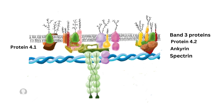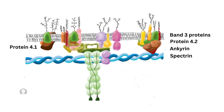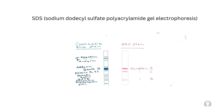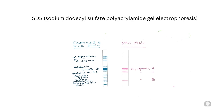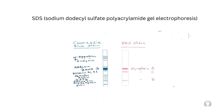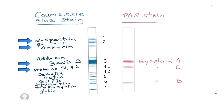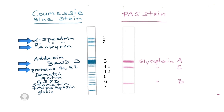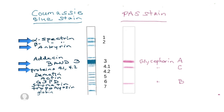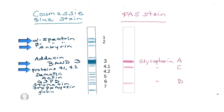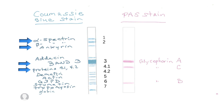For our topic, let's focus on these red blood cell membrane proteins. Using serum protein electrophoresis, we can see these protein bands shown on the left with Coomassie blue stain, and glycophorins A, B, and C on the right using a PAS stain. The blue arrows point to the key proteins that are missing or defective in hereditary spherocytosis and hereditary elliptocytosis.